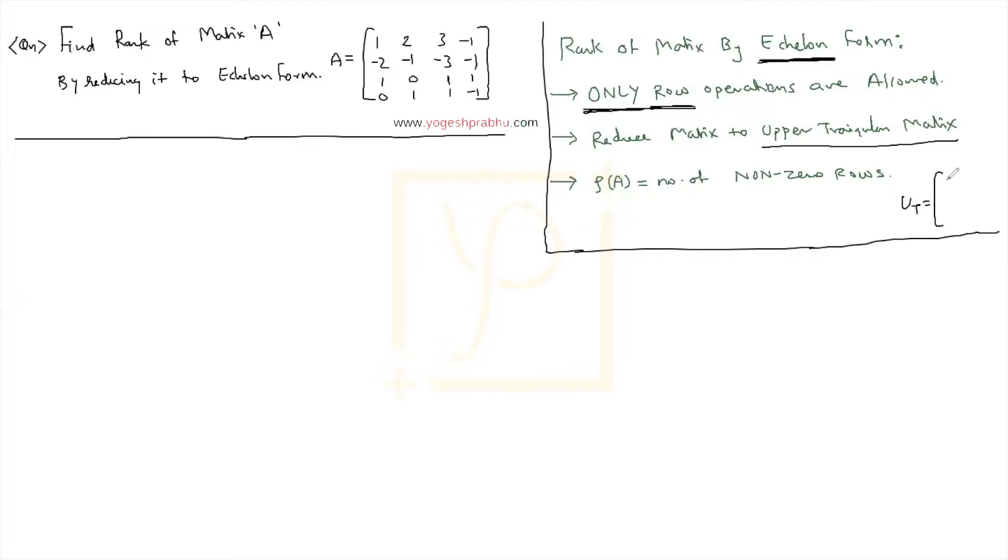It simply means that this is a diagonal of a matrix and when you call it as an upper triangular matrix all the values below the diagonal should be 0. And if that is the case the matrix is called as upper triangular matrix. And then the rank is nothing but number of non-zero rows.